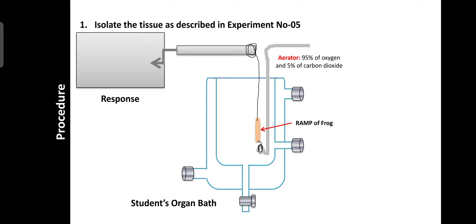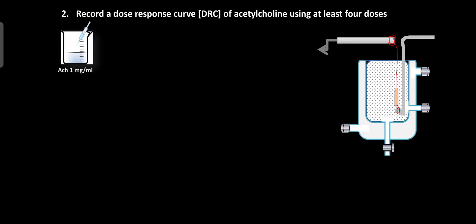Isolate the tissue as described in experiment number 5 and keep the tissue in the tissue organ bath using a student organ bath. Wash the tissue for 45 minutes to remove debris and waste material — this is known as the isolation of the tissues. After 45 minutes, isolation is completed, and during the isolation period, the Ringer's solution is changed at least 4 to 5 times.